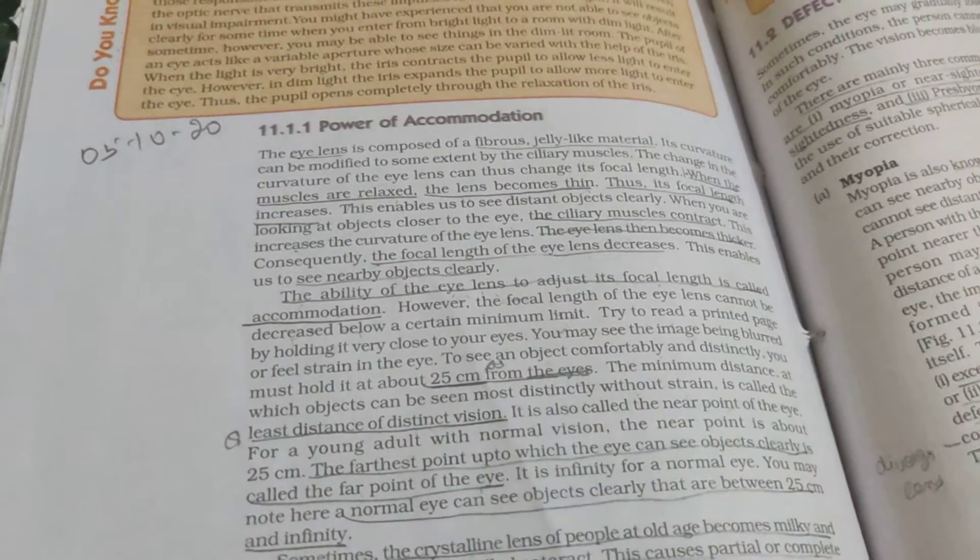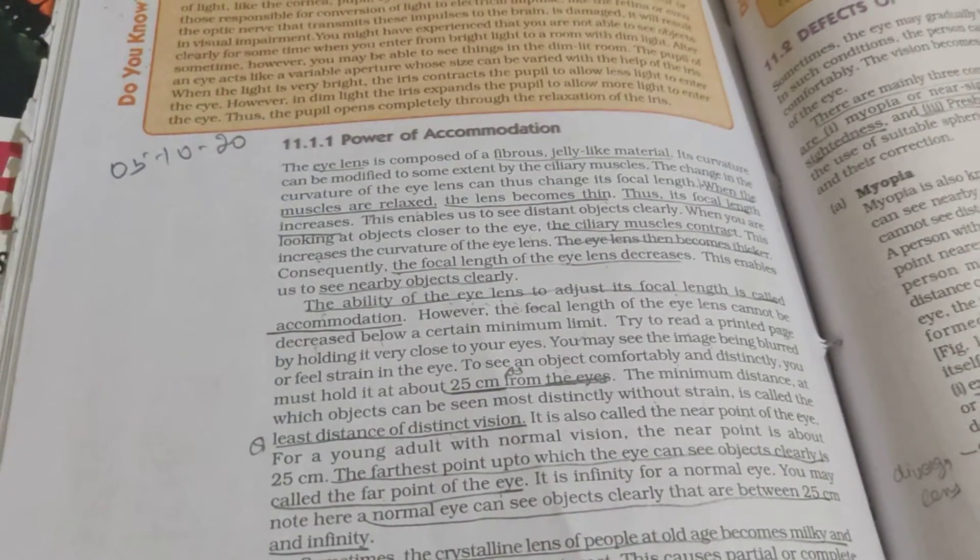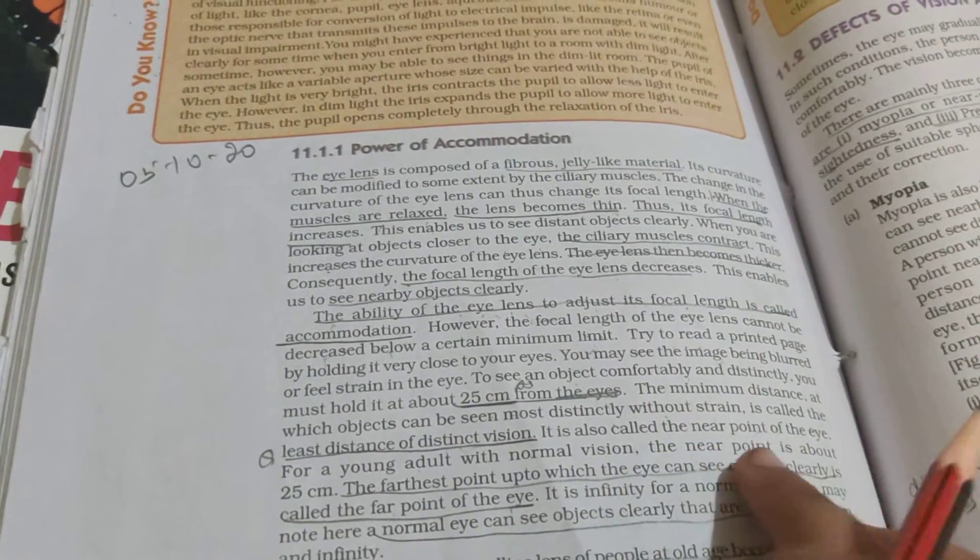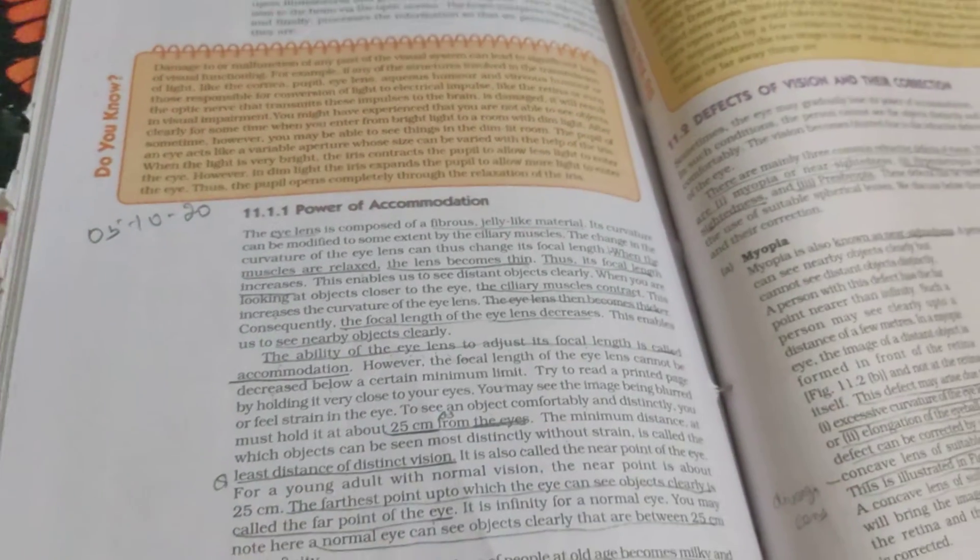How much is it? That is 25 cm from the eye. It is also called the near point of the eye. This is the near point of the eye.